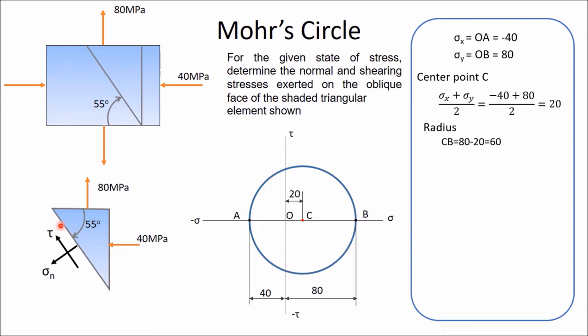Now you have to locate this plane. Here CB represents the Y plane because OB is 80 MPa, and CA represents the X plane. Our required plane makes an angle of 55 degrees in the clockwise direction from the Y plane. In Mohr's circle, we will draw double this angle — that is, 110 degrees — from the Y plane (from CB) in the clockwise direction.